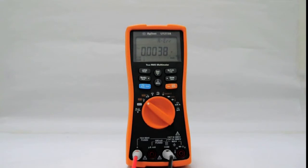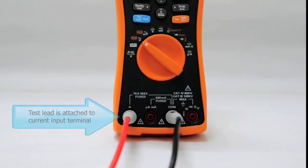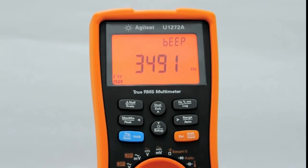An example of an incorrect lead connection is when the multimeter is set to take voltage measurement, but the test lead is attached to the current input terminal.